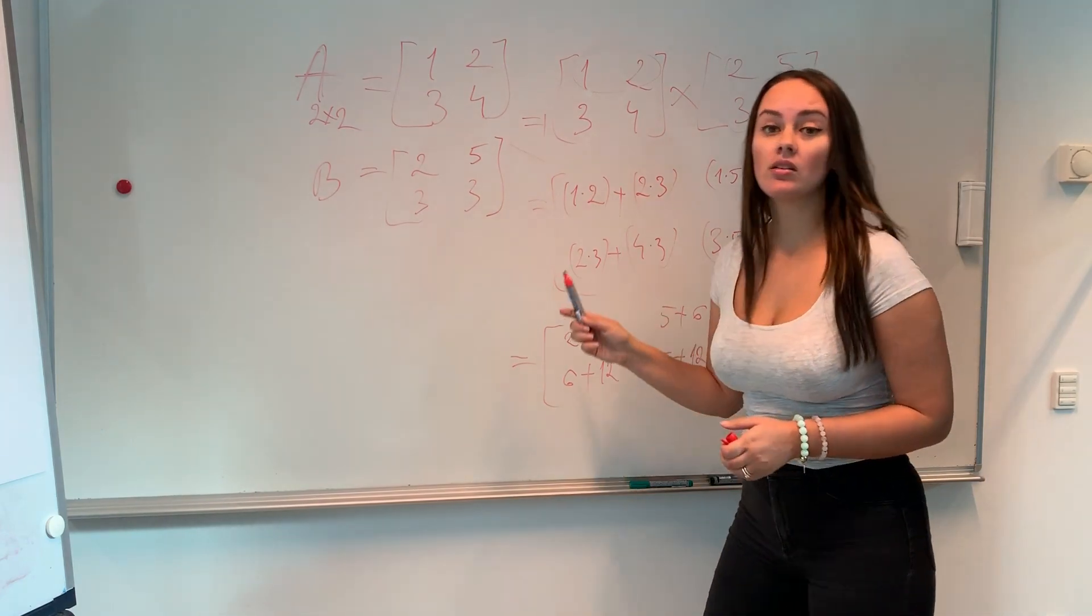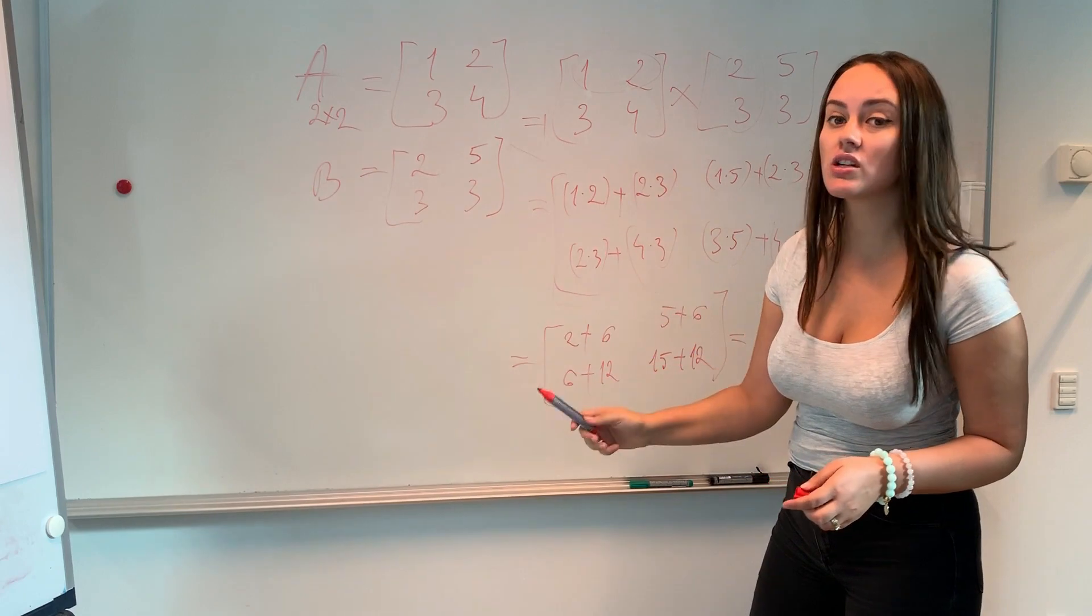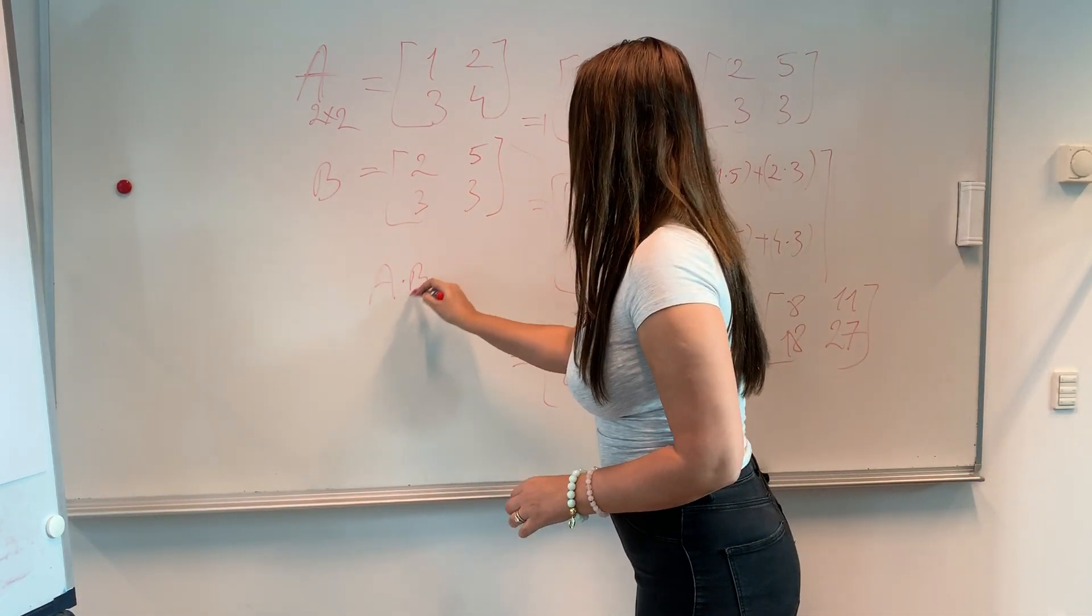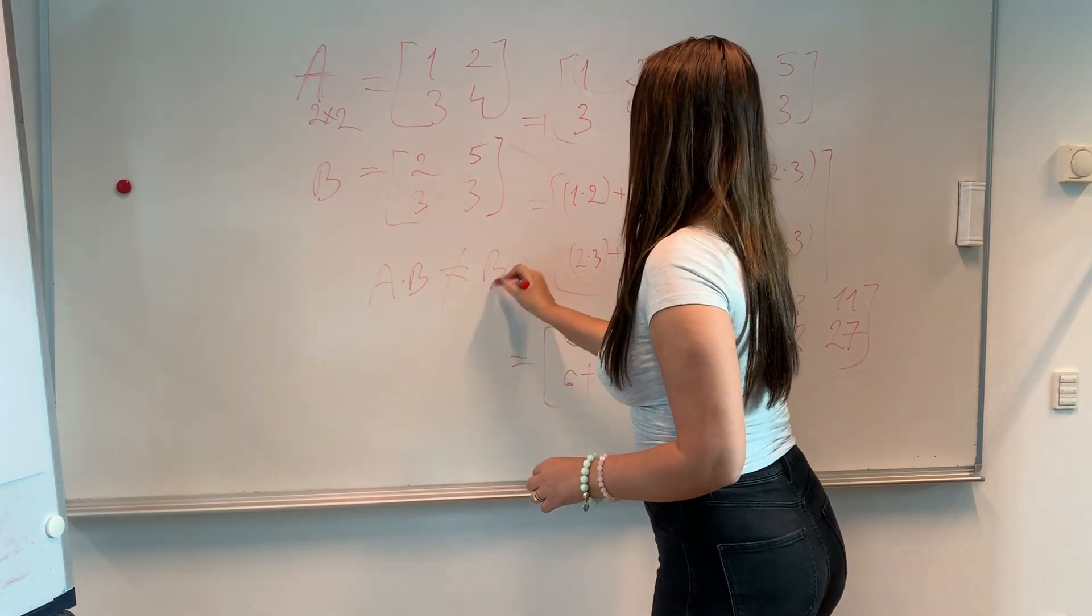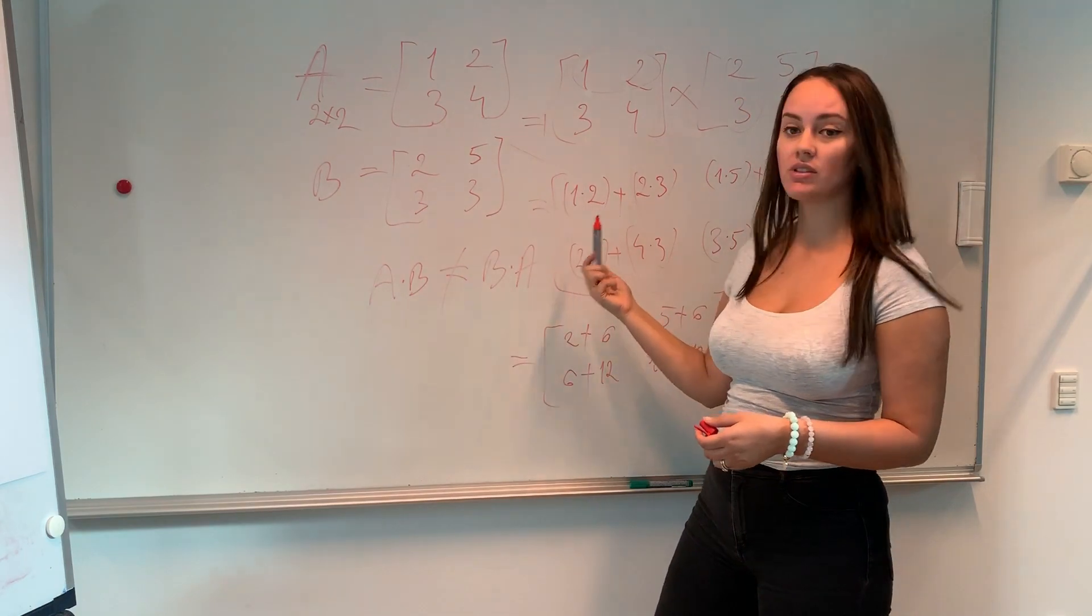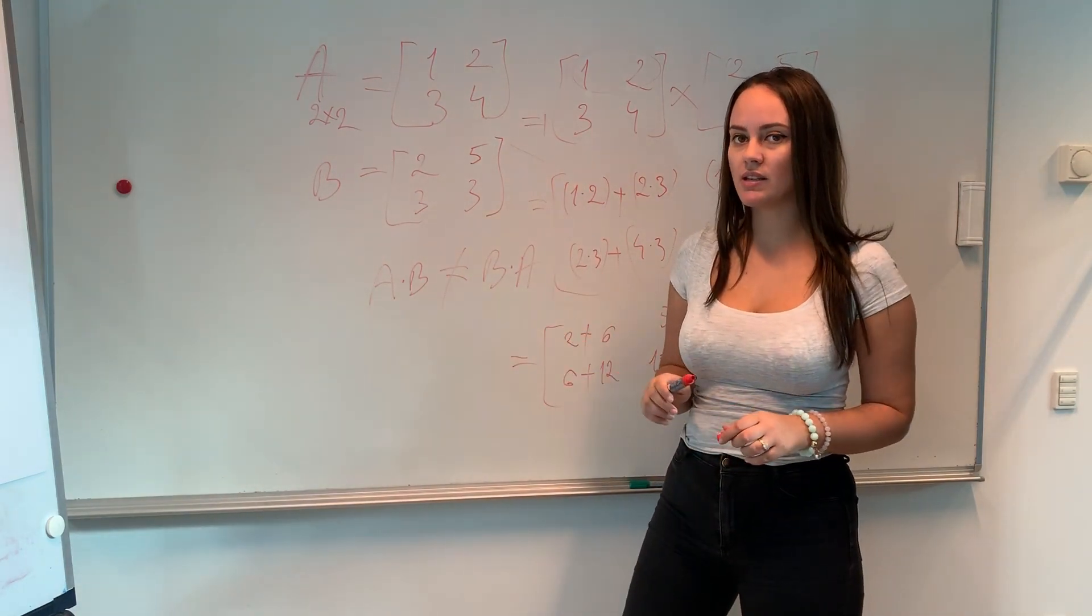Basically, another important property is that the multiplication of matrices is not commutative. So A times B does not equal B times A. And I actually encourage you to take these matrices and try to multiply and see that the result is not going to be the same.